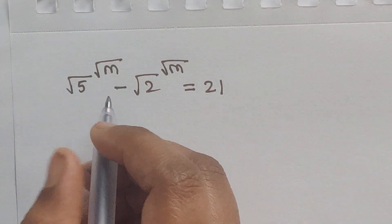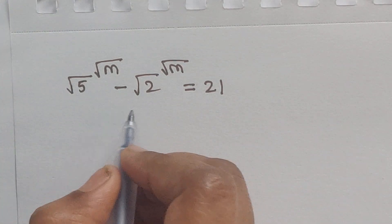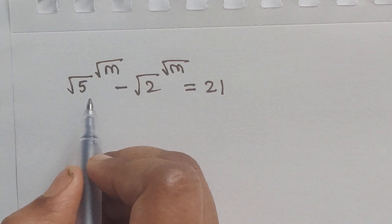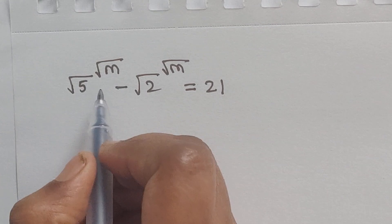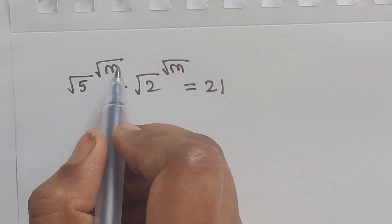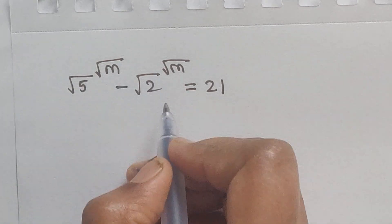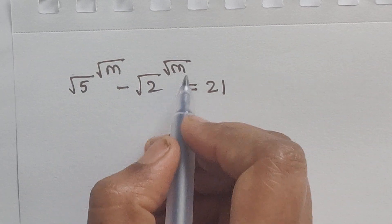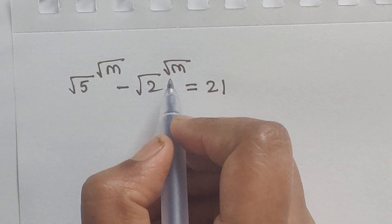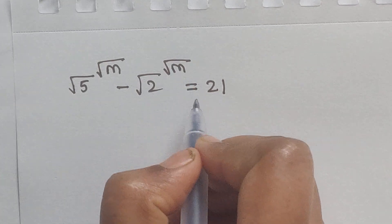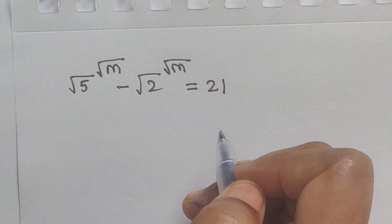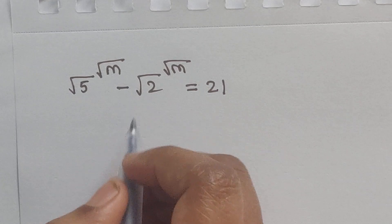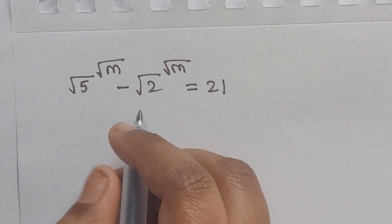Hello everyone, welcome back to our channel. Here we have one problem: square root of 5 to the power of square root of m, minus square root of 2 to the power of square root of m, equals 21. So how do we solve this problem? Let's see.